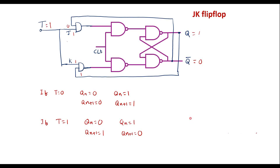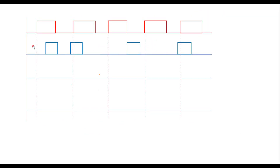Now let me explain this along with the waveform. Let me consider this waveform — let this be the clock signal, and I will consider this as the T input signal. I will consider the positive edges of the clock. At the beginning, I will assume the flip-flop is in the reset state — that is, Q equals 0. When the first edge of the clock arrives, at this instant, T is equal to 0.